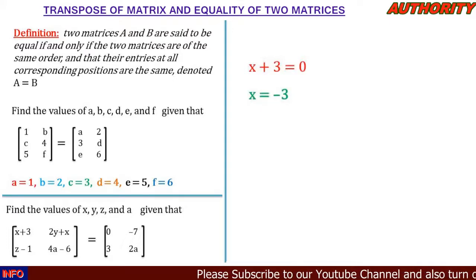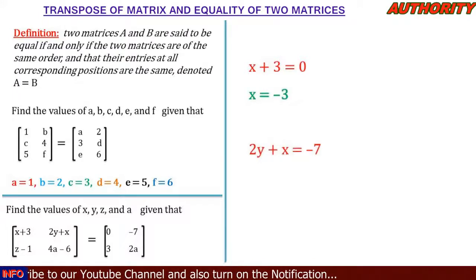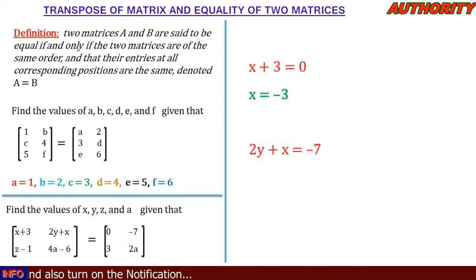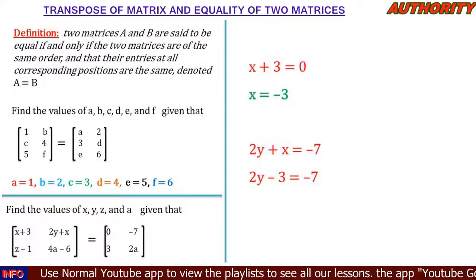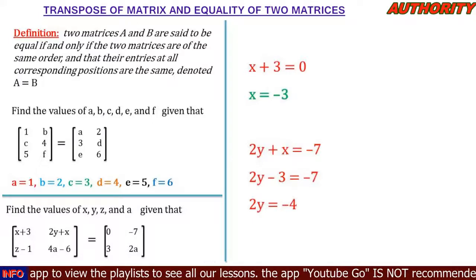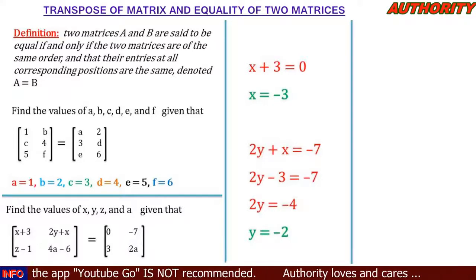For c12 (row 1, column 2): 2y + x = -7. We know x = -3, so 2y - 3 = -7. Taking -3 to the other side: 2y = -7 + 3 = -4. Dividing by 2: y = -2.